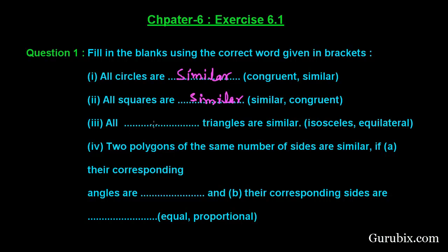And in third part, we are given all blank space triangles are similar, and we are given two options: isosceles or equilateral. So if we put isosceles here, all isosceles triangles are similar, it is not possible because the third side, sides can be different. So shape of the triangles may be different. So it is not possible. But all equilateral triangles are similar, it is true because the shape of all equilateral triangles will be the same. Therefore, they are similar. So we shall write here, equilateral.